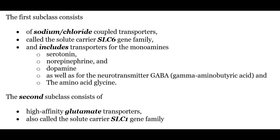The first subclass consists of sodium chloride coupled transporters called the solute carrier SLC6 gene family, and includes transporters for monoamines such as serotonin, norepinephrine, and dopamine, as well as for the neurotransmitter GABA and the amino acid glycine.